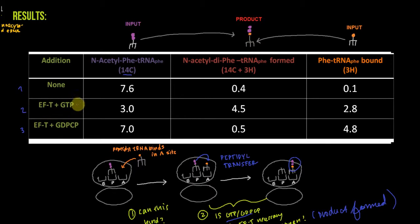Row two: we've added EF-T and GTP. The first thing we notice is that the input Phe-tRNA-Phe can bind, and we already know the input N-acetyl-Phe-tRNA-Phe can bind without EF-T, so it's no surprise it still binds when EF-T and GTP are added. This means we can create our product, this N-acetyl-di-Phe-tRNA-Phe, via peptidyl transfer. Peptidyl transfer can happen here because that's the only way we can form this product.